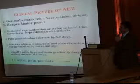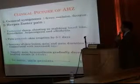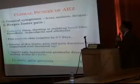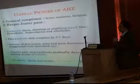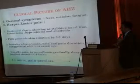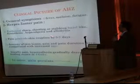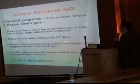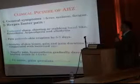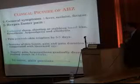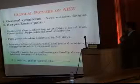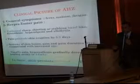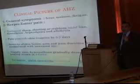The clinical picture of acute herpes zoster includes general symptoms such as fever, malaise, and fatigue. The herpes zoster pain is unilateral, sharp, shooting or stabbing, band-like, with dysesthesia, hyperalgesia, and allodynia. Pain precedes skin eruption by 5 to 7 days. The severity of skin lesions, pain, and pain duration are all exaggerated with increasing age. Usually pain and hyperthesia gradually decrease and healing occurs in about one month, but in some patients pain persists, producing post-herpetic neuralgia.